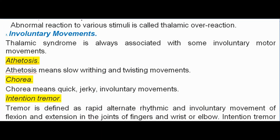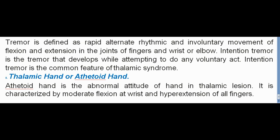Abnormal reaction to various stimuli is called thalamic overreaction. Thalamic syndrome is always associated with some involuntary motor movements: athetosis — slow writhing and twisting movements; chorea — quick, jerky involuntary movements; and intention tremor — rapid alternate rhythmic and involuntary movement of flexion and extension in joints of fingers, wrist, or elbow, which develops while attempting any voluntary act and is a common feature of thalamic syndrome. Thalamic hand or athetoid hand is the abnormal attitude of hand in thalamic lesion, characterized by moderate flexion at the wrist and hyperextension of all fingers.